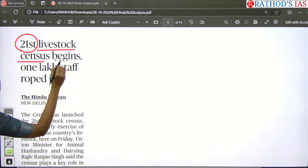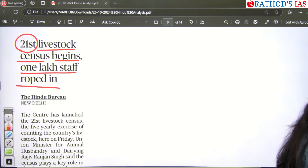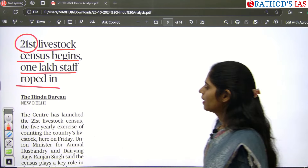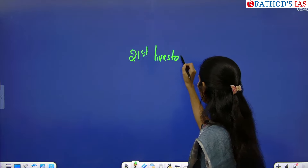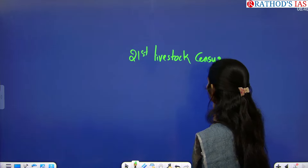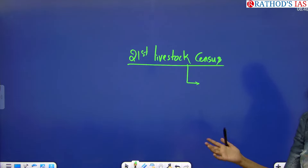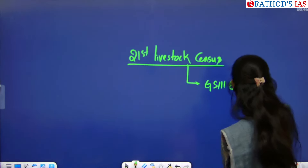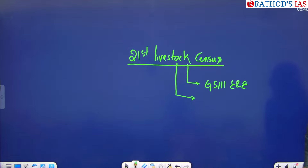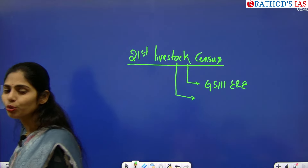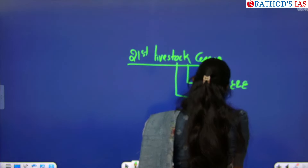The next article: '21st Livestock Census begins, 1 lakh staff roped in.' The keyword is 21st Livestock Census. Livestock comes under biodiversity, so it falls under GS Paper 3, environment and ecology. Livestock also contributes to GDP — for example, White Revolution 2.0 is related to milk production — making it important from GS Paper 3 under economy. When we have census data, we can make proper policies and interventions, making it relevant to GS Paper 2 under governance.